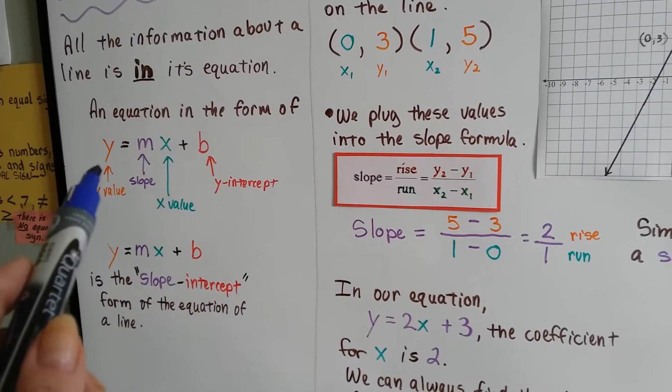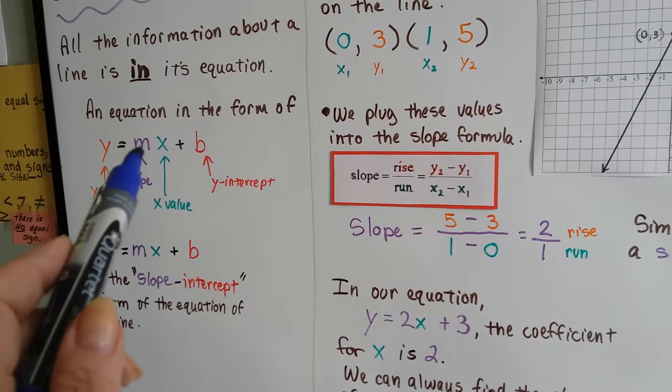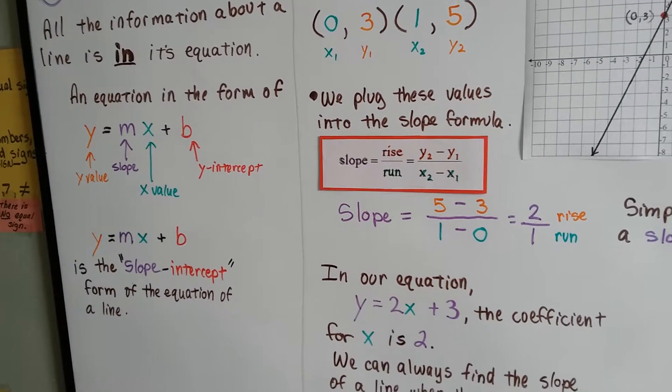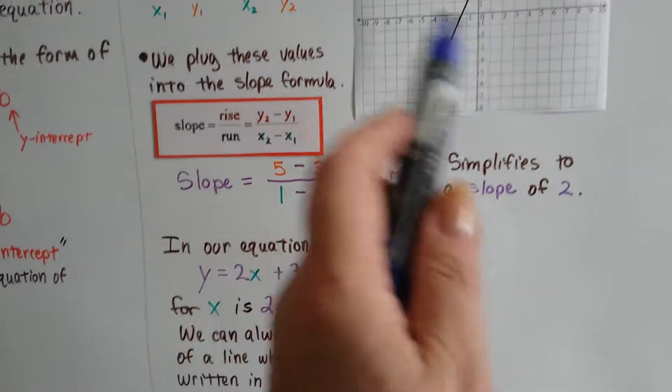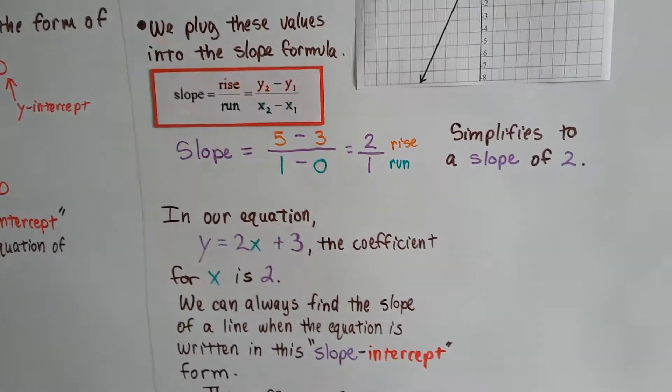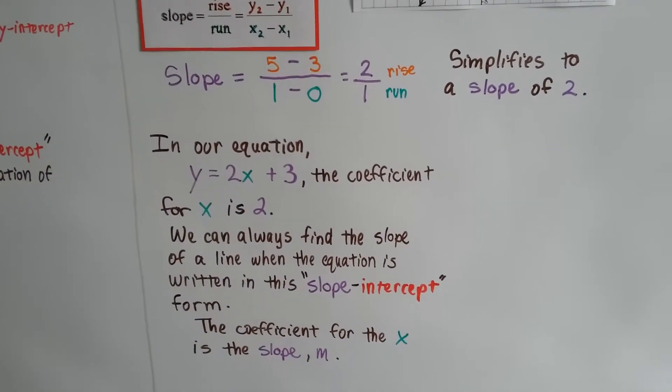Remember we said, for y equals mx plus b, this coefficient for x is the actual slope. So you could just look at this equation without having to do any graphing or points or any of this math, and say, oh, the slope is 2. We can see it.